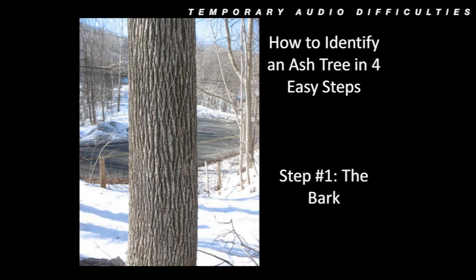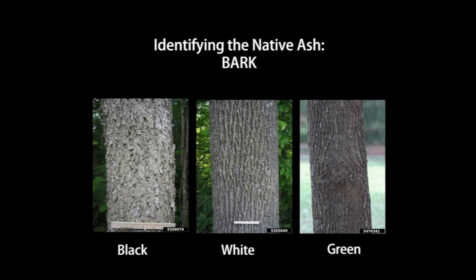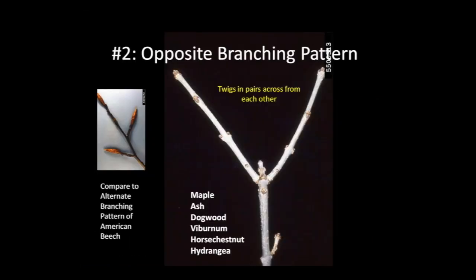The first part of how to identify an ash is the pattern on the bark. The bark is not smooth but develops ridges, and when mature those ridges criss-cross into a strong diamond pattern. Look up into the canopy and determine the branching pattern. There are two types: opposite and alternate. Notice how the twigs grow opposite one another. The maple group is the only other native tree group to follow this pattern. The rest of the trees, like American beech, follow an alternate or offset branching pattern.